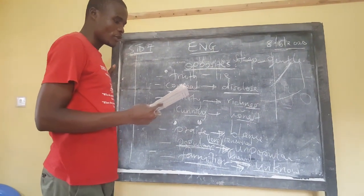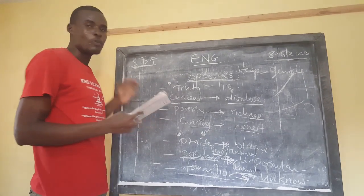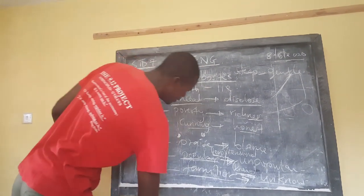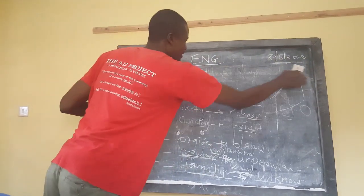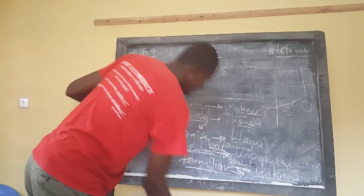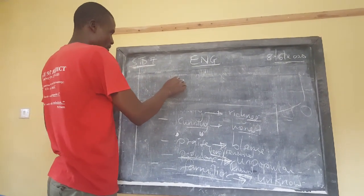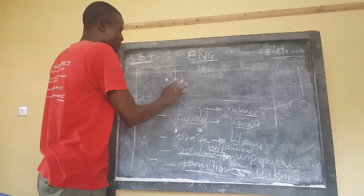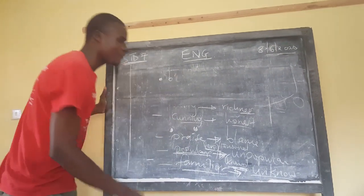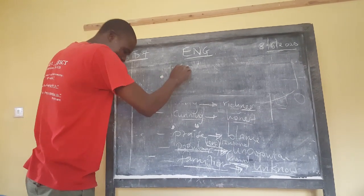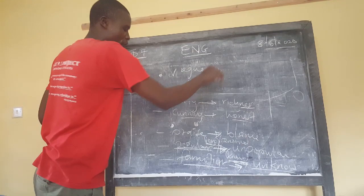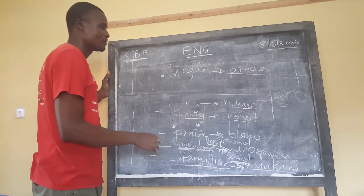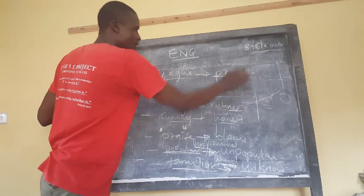Tiny is to large. Truth is to a lie. Vacant is to occupied — a vacant room versus an occupied room. Then we have 'vague' — a vague answer is when you have been asked something and your answer is very far from correct. The opposite of vague will be 'precise' — when you are precise, you are giving the right answer, directing straight to the point.